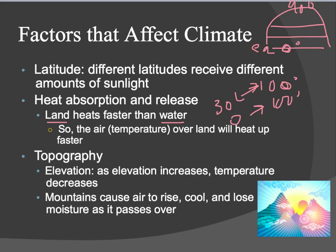Topography, or the lay of the land, also affects your climate. Things like elevation — the higher up you are in the mountains, temperature will decrease. As elevation increases, temperature decreases. Also, depending on what side of the mountain you're on, it can affect your weather. Mountains will cause air to rise and cool and then actually lose moisture as it passes over. That's why you can see a desert right behind a mountain.